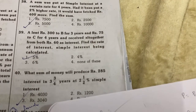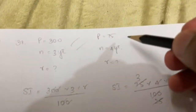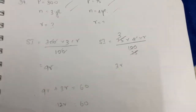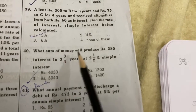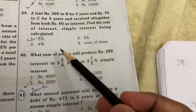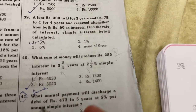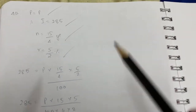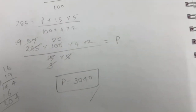The interest is 60 rupees. What is the rate of interest? The rate is 5%. For the next problem: what sum of money will give that interest? We substitute the values to get 3040. I will solve this problem in the next video. Thank you, have a nice day, bye.